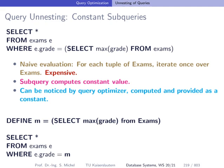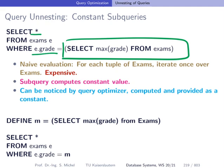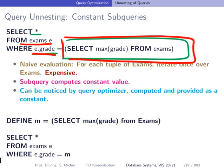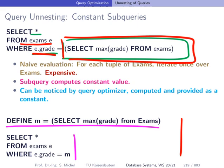Going back to the Type A example: we want all attributes from the exams relation where the grade equals the maximum grade for all exams. The subquery is independent and can be executed only once. In a naive approach — executing it for every exam — the cost is enormous. Instead, we define parameter m as this maximum grade, then rewrite the query as: SELECT * FROM exam e WHERE e.grade = m. The subquery is executed only once, whereas the naive way would be super costly.